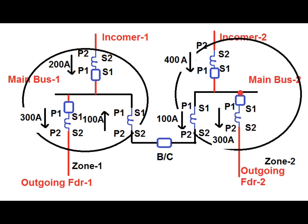Similarly for zone 2 or zone B, the load current for outgoing feeder 2 is 300 amperes flowing from P1 to P2, and 100 amperes also flows from P1 to P2 through the bus coupler. So 400 amperes flows from P1 to P2 in zone 2, while incomer 2 supplies 400 amperes flowing from P2 to P1 towards the bus. As per KCL, the sum of currents at main bus 2 is again 0, and therefore under normal load condition the zone 2 or zone B differential current is 0.